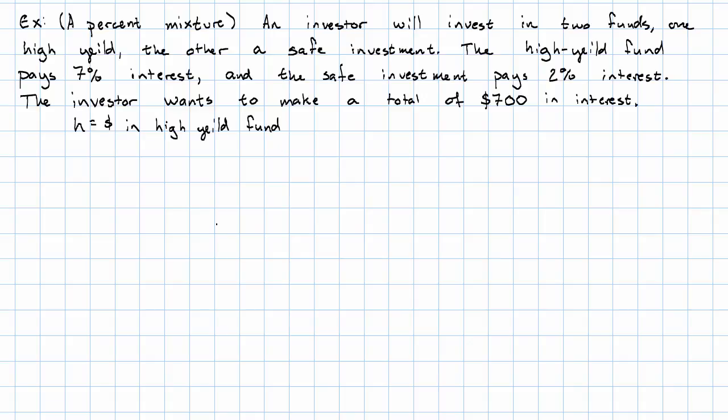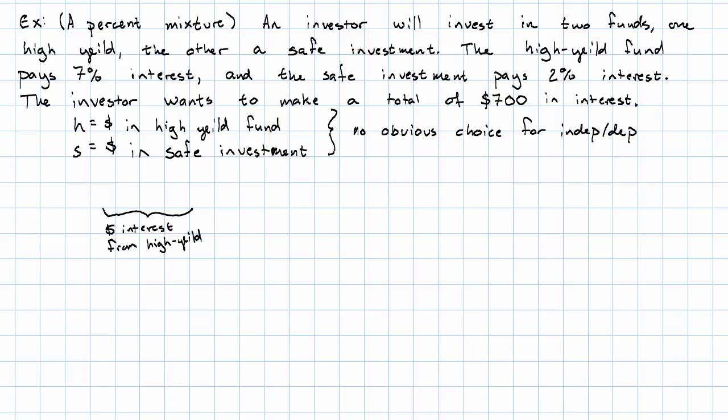Our variables are the amount invested in the high-yield fund and the amount invested in the safe investment. Again, it's not obvious which of these is independent and which one is dependent, so we'll make that choice if we need it. But we want the interest from the high-yield investment plus the interest from the safe investment to add up to $700.